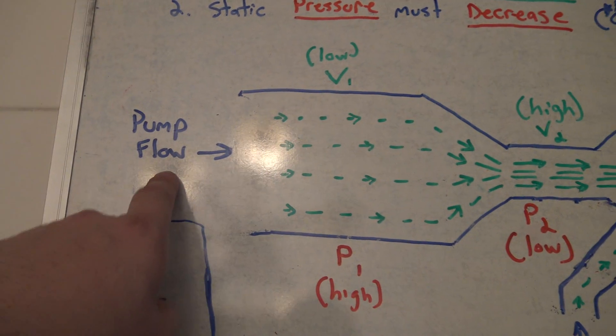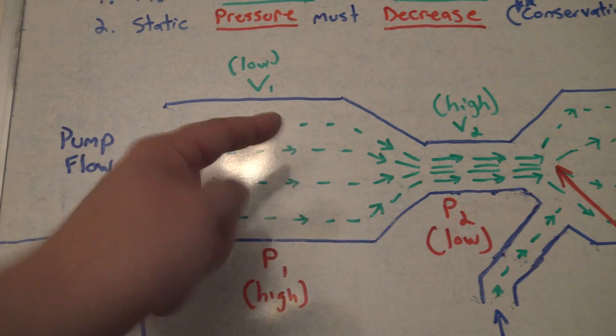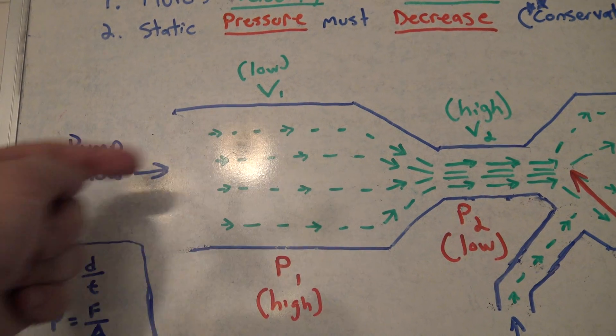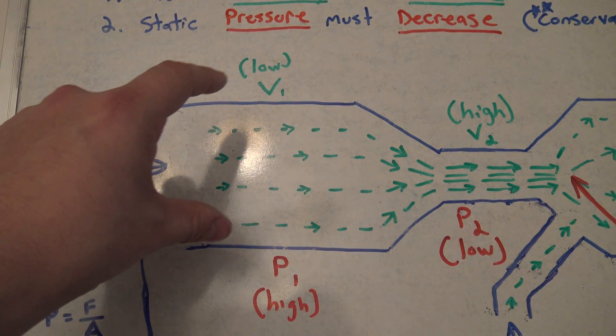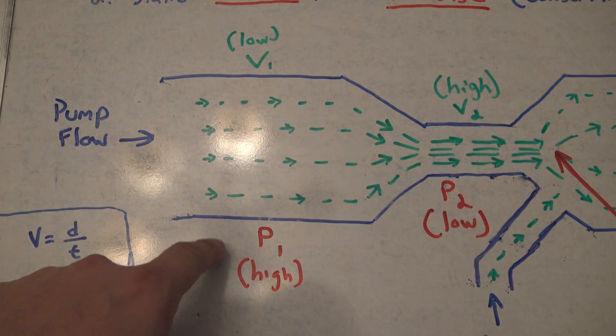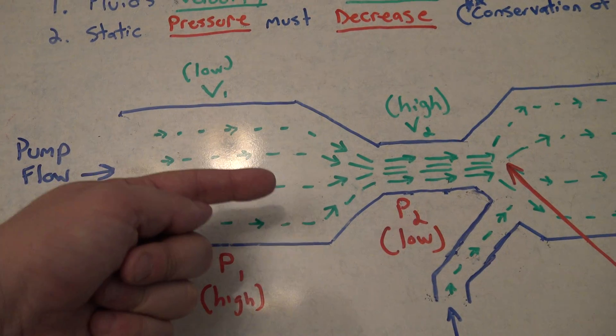So on this end we have a pump which is pushing water in this direction. We have a velocity of that water which is low because this is a large diameter pipe, but we have a high pressure on this side because the pump is pumping water in this direction.